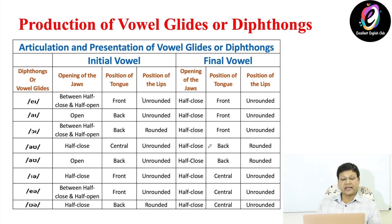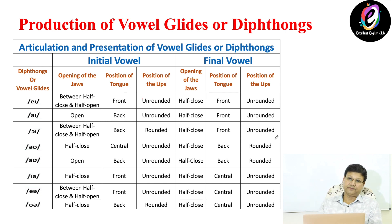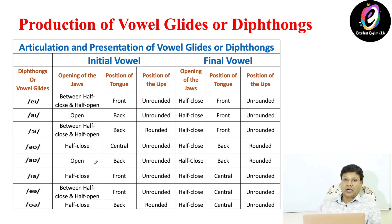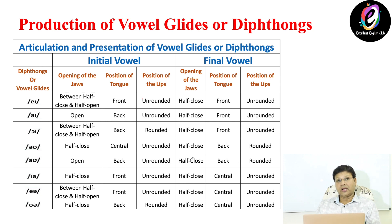Then E-E is between half close and half open, front, and unrounded. The schwa is half close, central, and unrounded. For U-A: U is half close, back, and rounded. The schwa is half close, central, and unrounded. This is the three-term description of all the vowel glides.